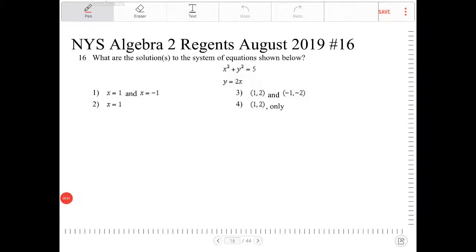What are the solutions to the system of equations shown below? So the first equation there I see is a circle, and the second equation is the equation of a line. So I can have potentially one solution, two solutions, or no solutions. Let's take a look.